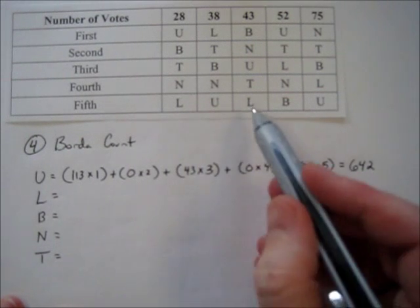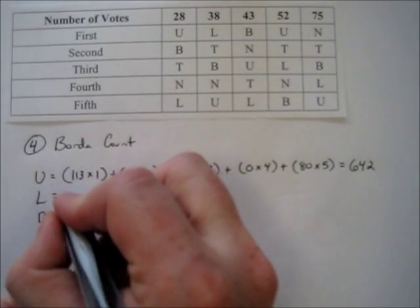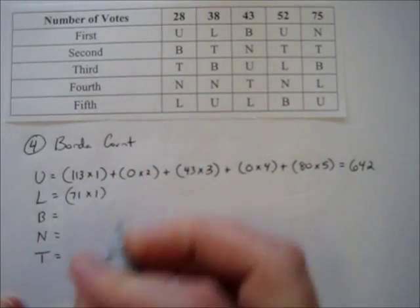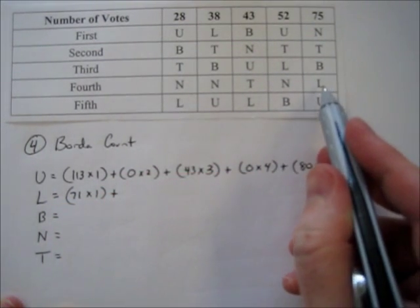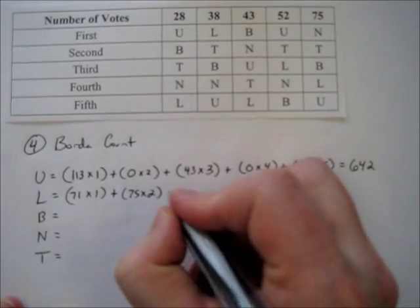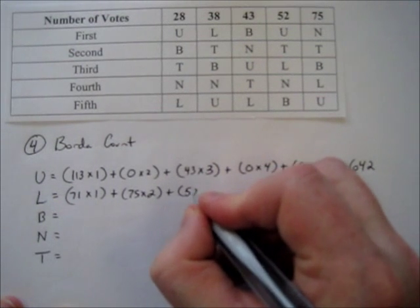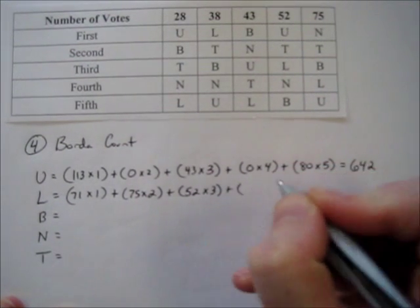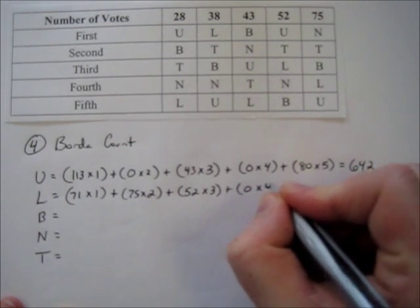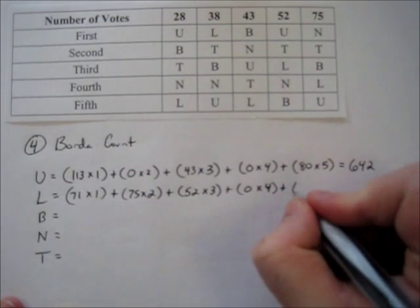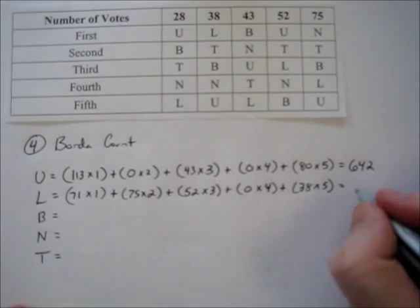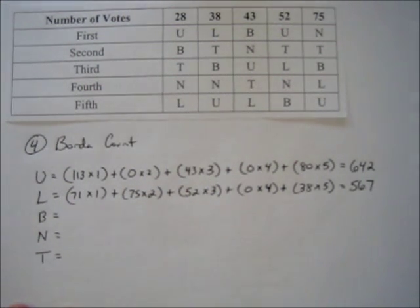For Lifehouse: 28 plus 43 makes 71 last-place votes, plus 75 next-to-last-place votes, plus 52 third-place votes, plus no second-place votes, plus 38 first-place votes. Typing that into the calculator gives 567 total points.